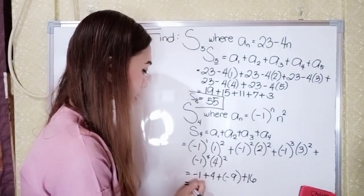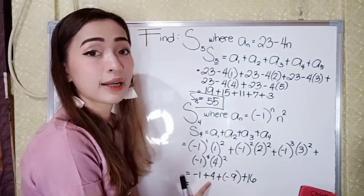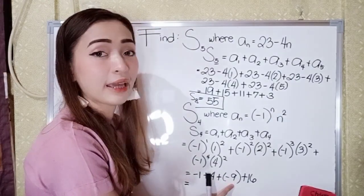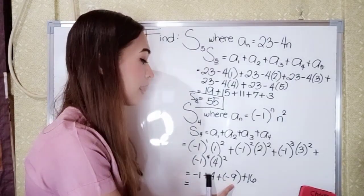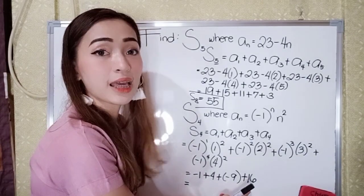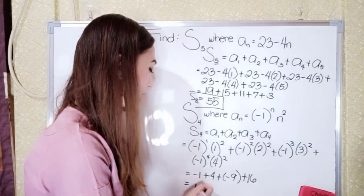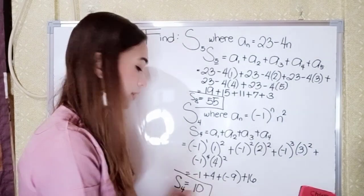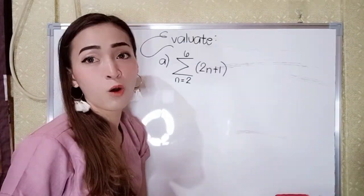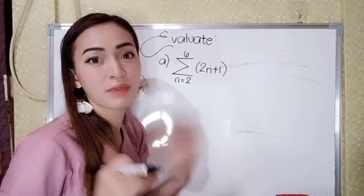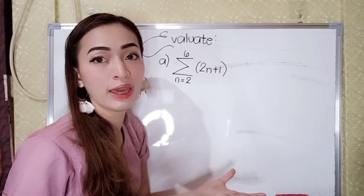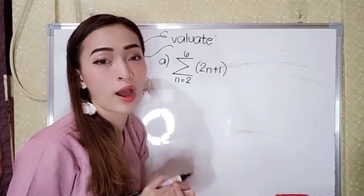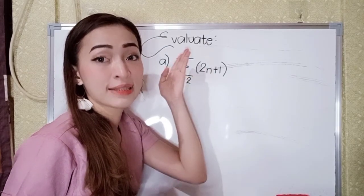Now let's add: negative 1 plus 4 is 3, 3 plus negative 9 is negative 6, negative 6 plus 16 is 10. So our S sub 4 is 10. We also have, for example, the summation. For letter A, evaluate the summation of 2N plus 1 from N equals 2 to 6.